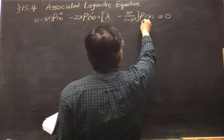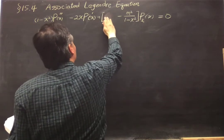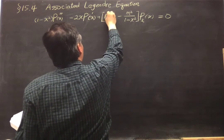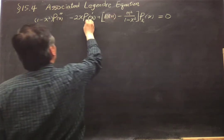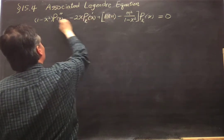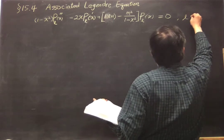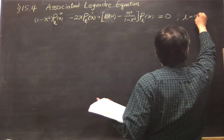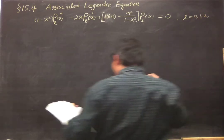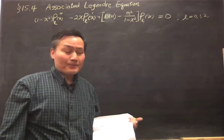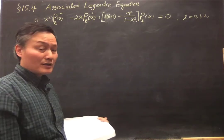That is indicated by L with the eigenvalue Lambda equals L times L plus 1, and L is 0 or all positive integers. So that's what we have been talking about.